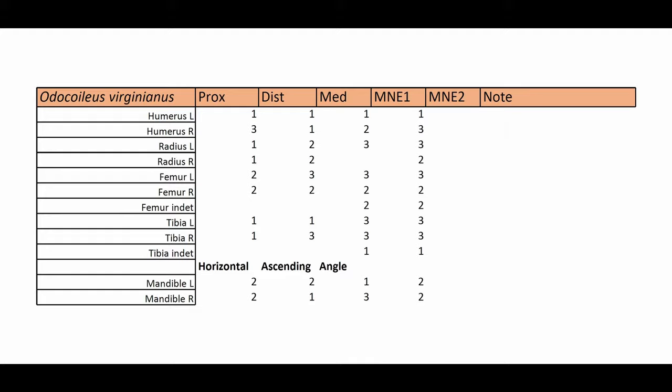And then we have a column for our first MNE count per element. And then our rows here, which are each element for the right and the left, and sometimes we'll have leftover parts that couldn't be identified to side. So we'll have an indeterminate row in those cases as well. And I'll elaborate on that in a bit.